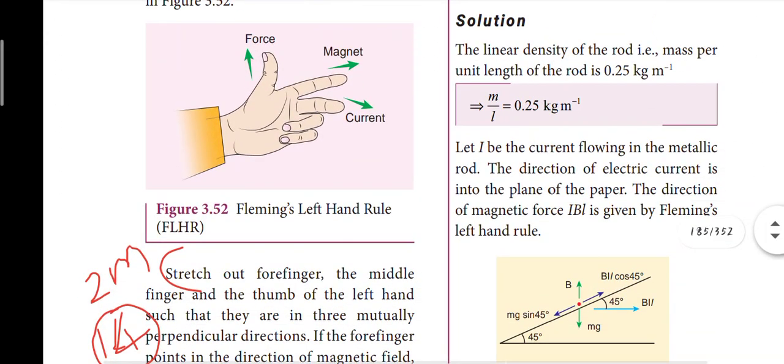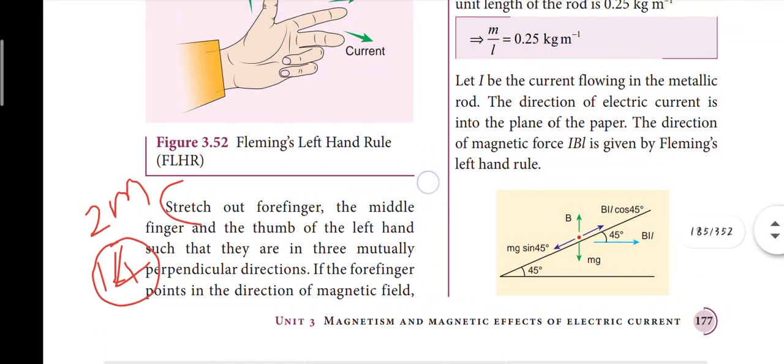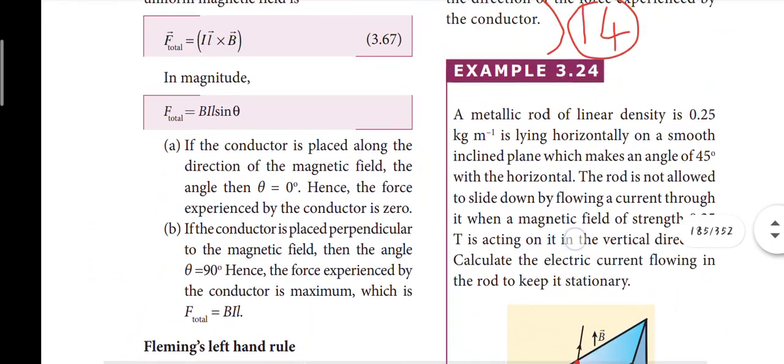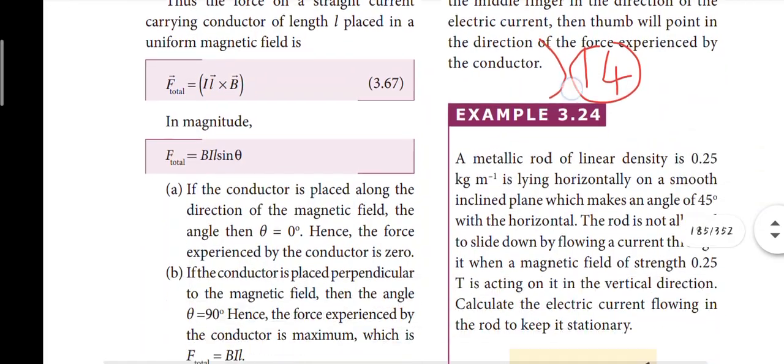Fleming's left-hand rule — the fourteenth question — is on page 177. Fleming's right-hand rule is also there. The manner of the conductor should be noted.